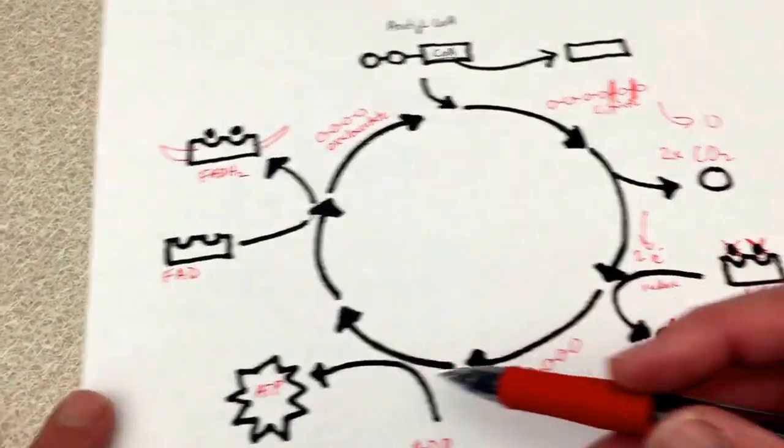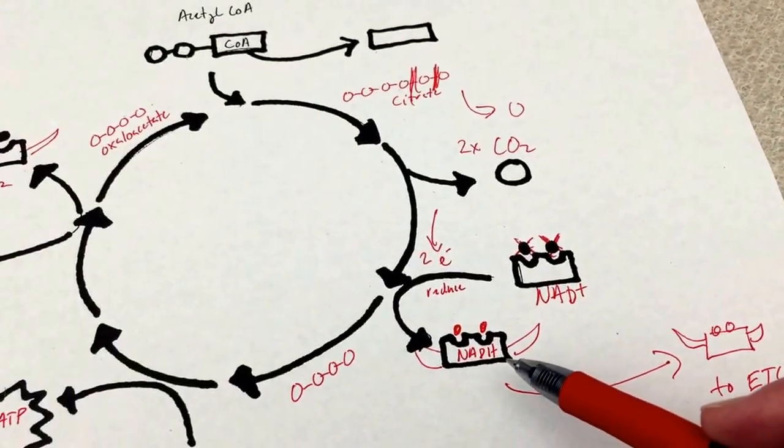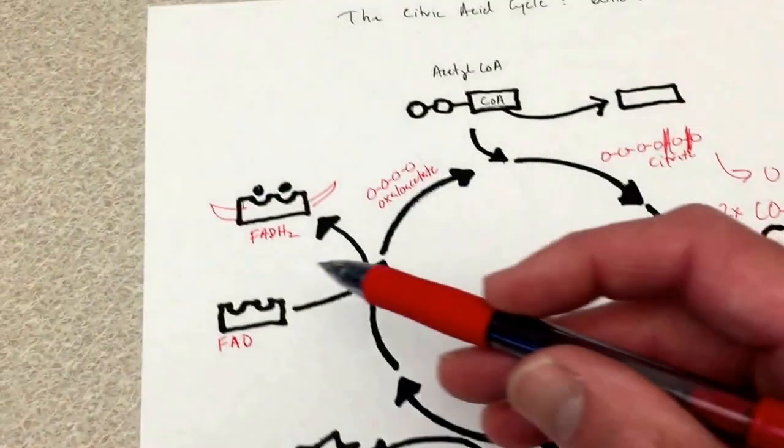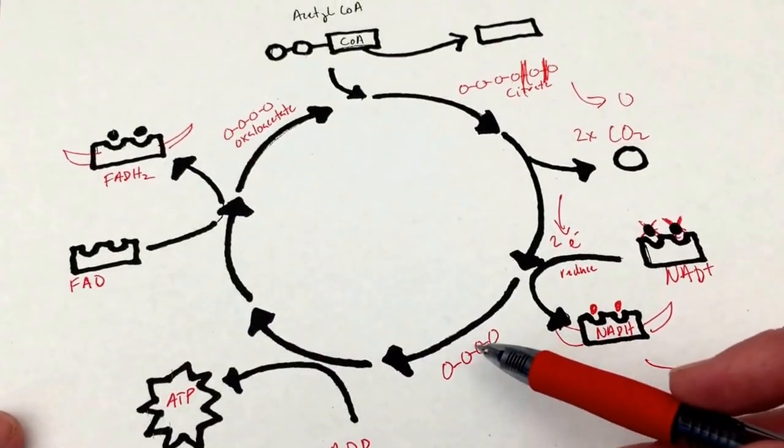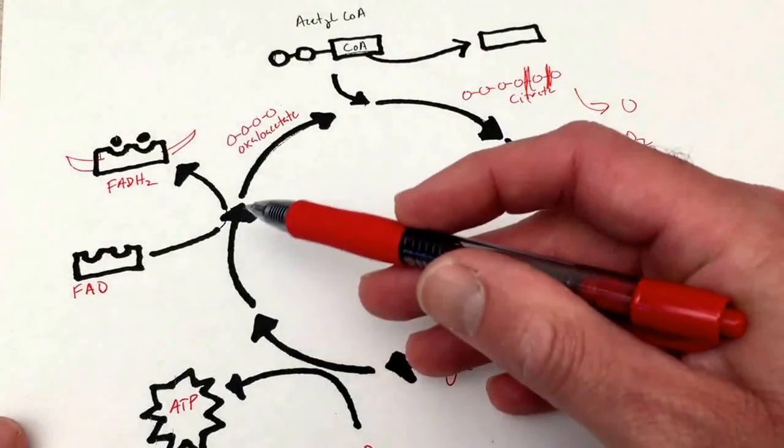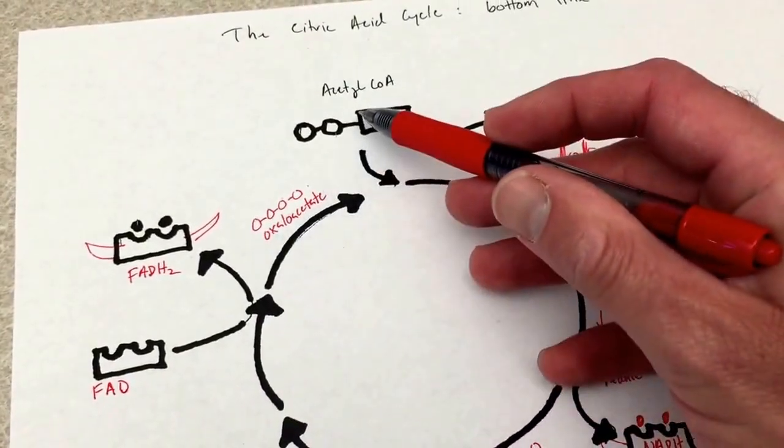But the most important thing is that we get electrons loaded onto our carriers NADH and FADH2. After we've stripped as many electrons as we can off of this four carbon molecule, oxaloacetate can then hook up with another acetyl CoA.